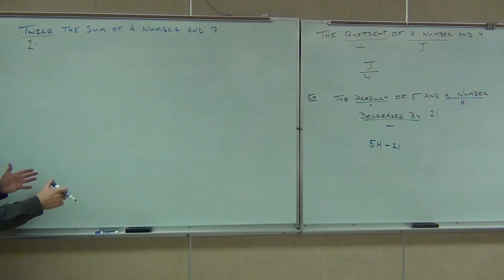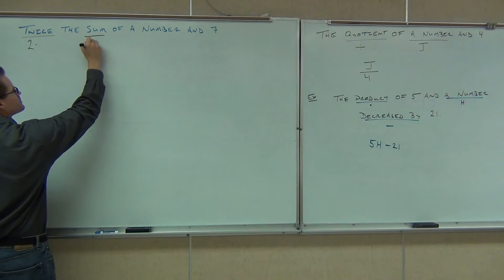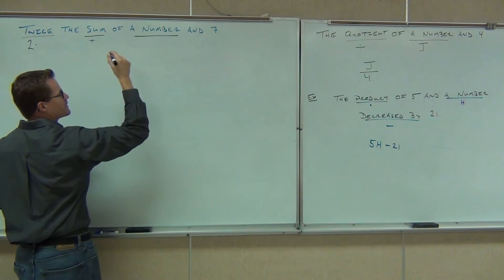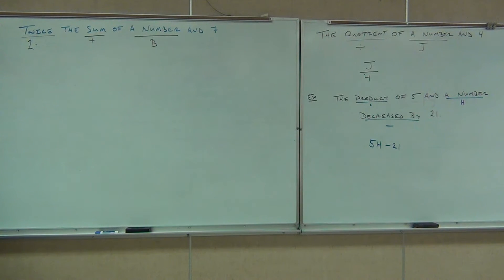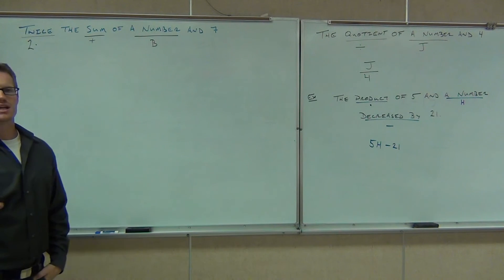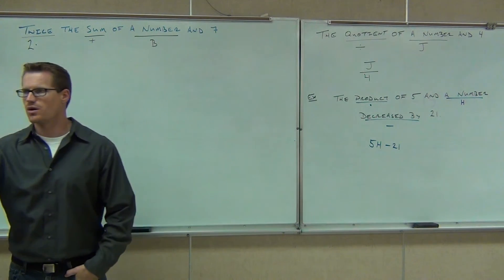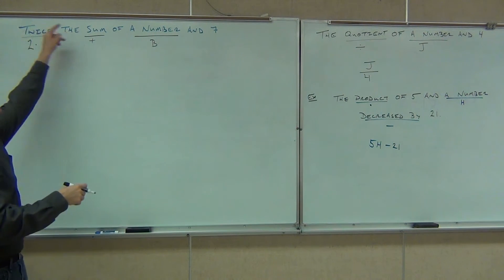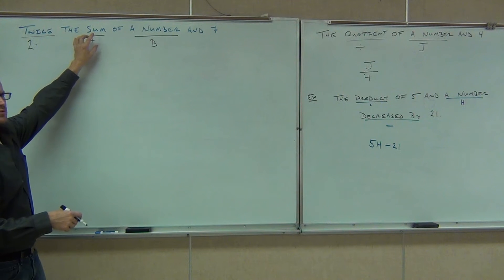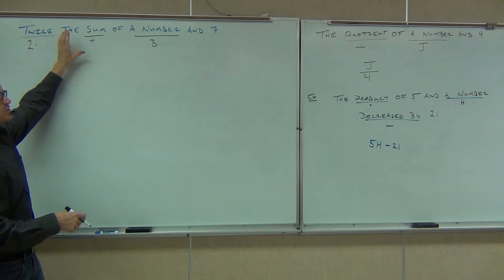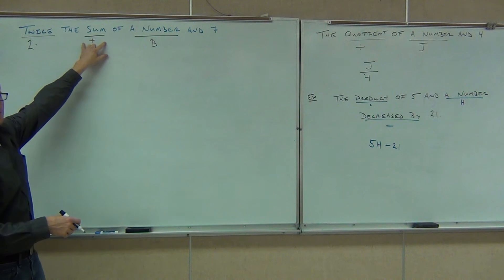Twice means two times. That's what twice is for us. So twice we underline that. Sum, I already know that means plus. A number, I already know that could be anything. Let's pick B. So twice the sum of a number in seven. Here's the deal. Whenever it says like the product of or twice the or sum of, and it doesn't give you a number afterwards, it says twice the, and then it says, wait, not twice seven or twice any, not twice a number. It says twice the sum of something.